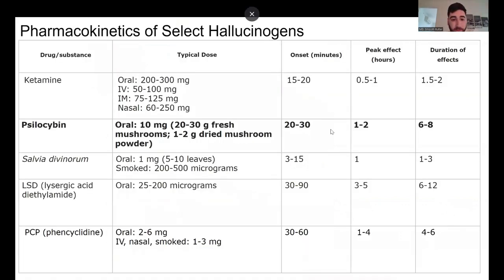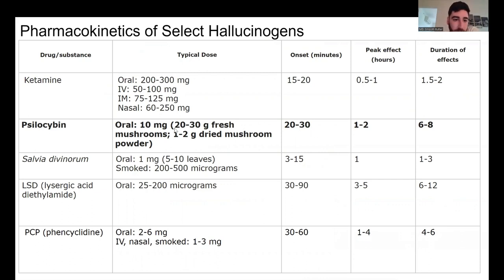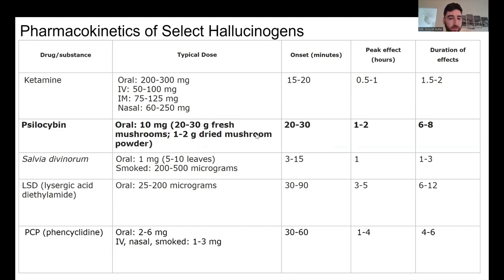This is a graph from UpToDate showing the pharmacokinetics of different hallucinogenic substances. Psilocybin takes six to eight hours to wear off, peaks in one to two hours, and its onset is 20 to 30 minutes. It also gives us dosing: 10 milligrams equates to 20 to 30 grams of fresh mushrooms, which is what we saw being weighed in an earlier image. You can also take one to two grams of dried mushroom compared to the 20 to 30 grams fresh — dried versus fresh have different dosing.